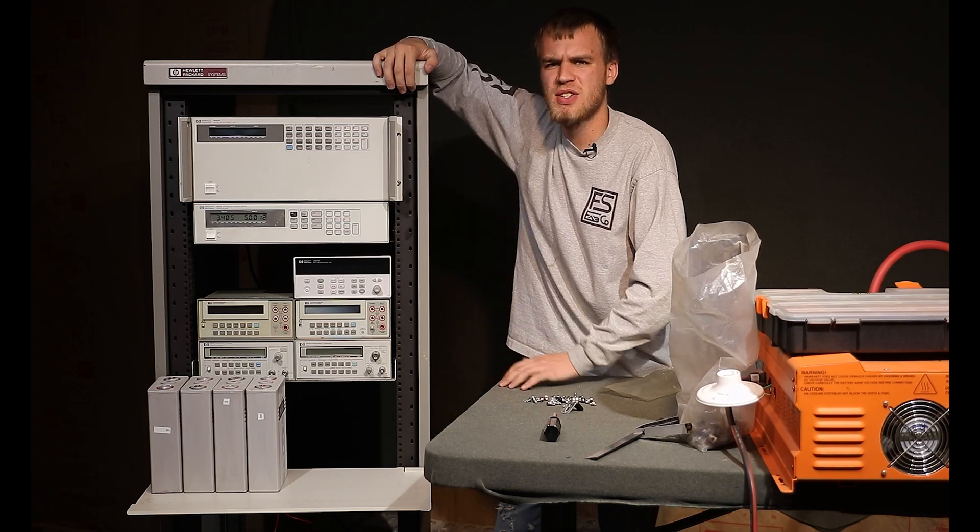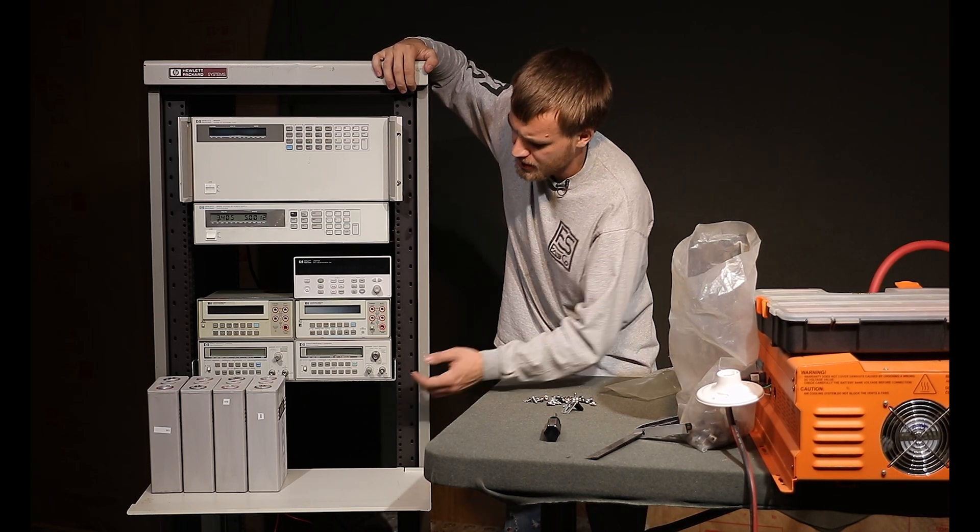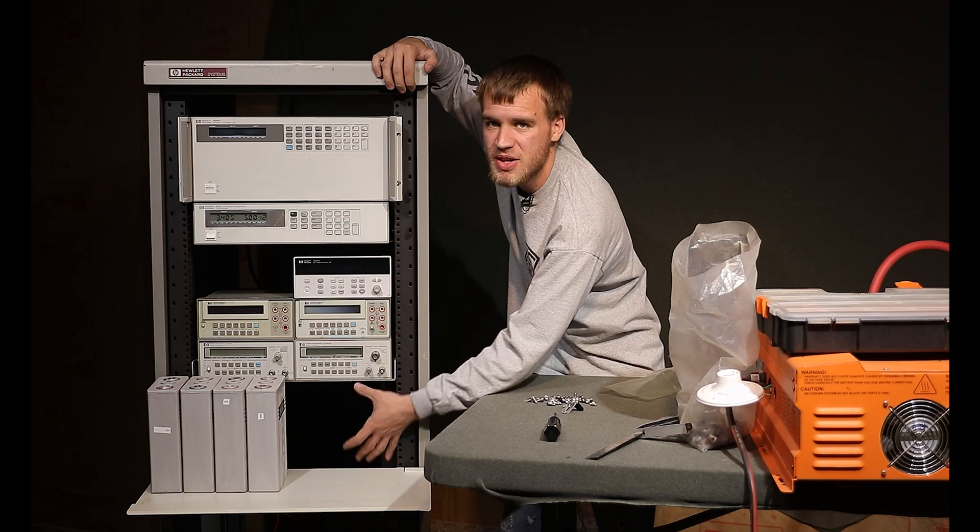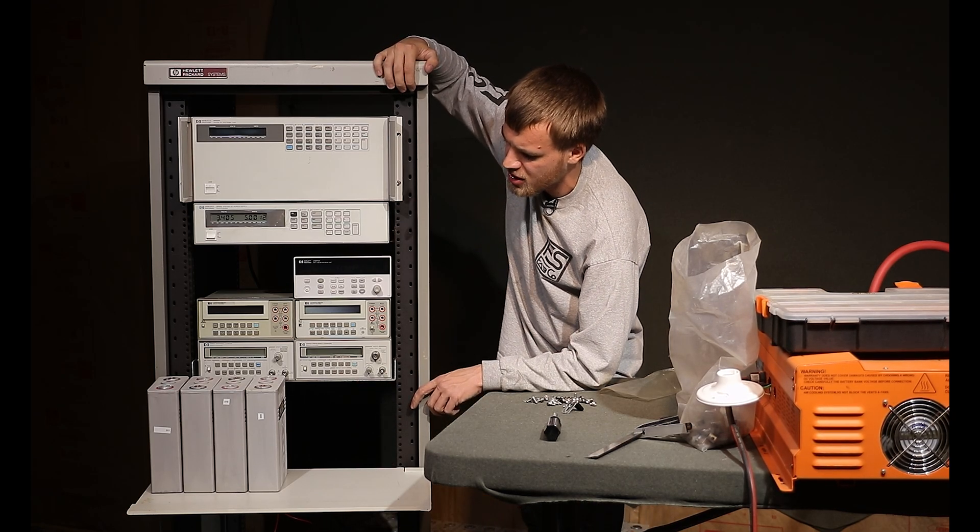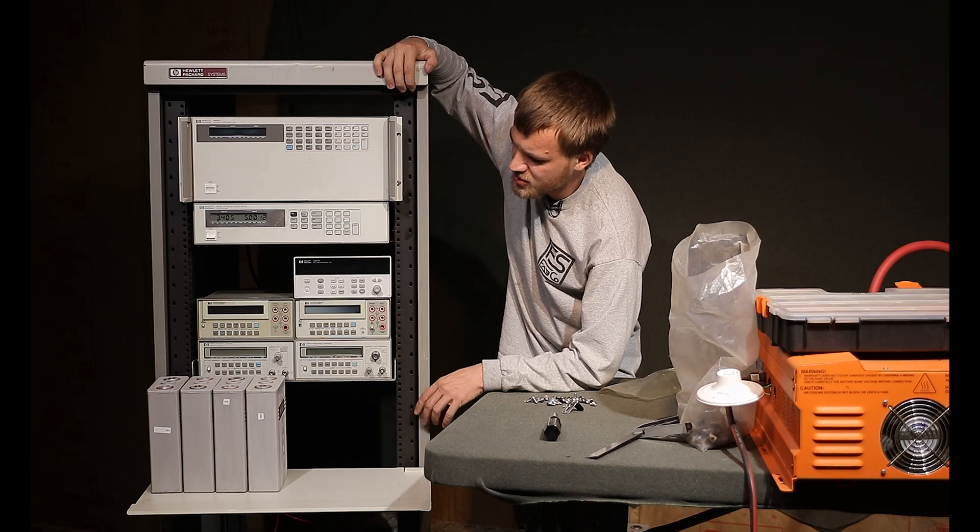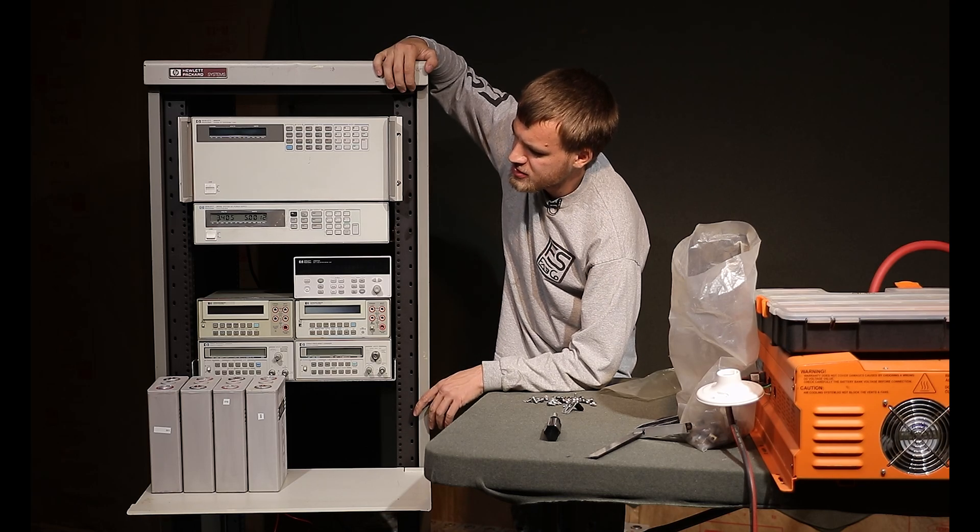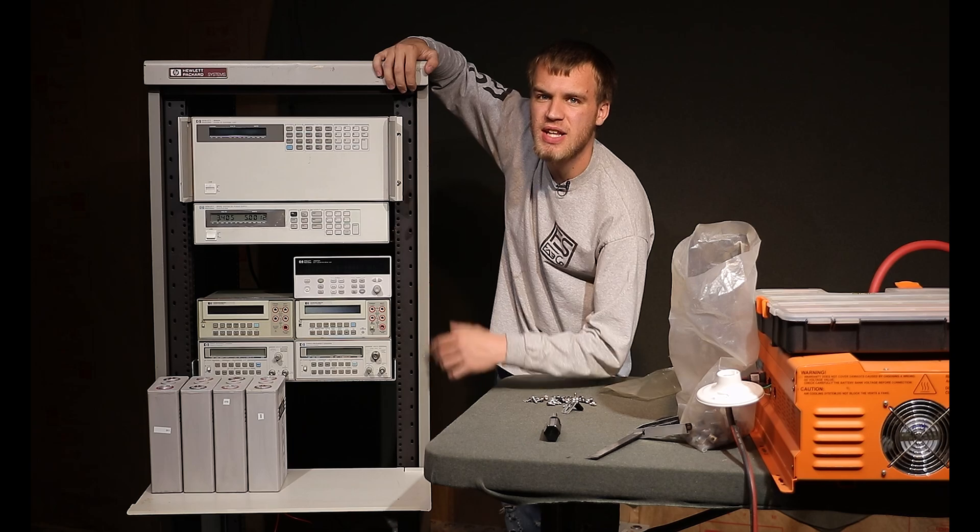You don't see any wires on here right now. They're probably going to come out in this space down here. There's about a four U space between the shelf and the equipment so that's where those will come out. We need to get some Anderson connectors for the electronic load.